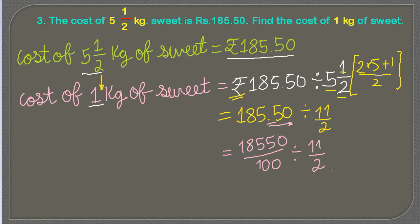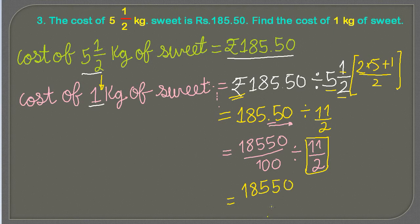As we studied in previous classes, when we divide by a fraction we take the reciprocal of the second fraction and multiply. So it becomes 18550 upon 100 multiplied by 2 upon 11.